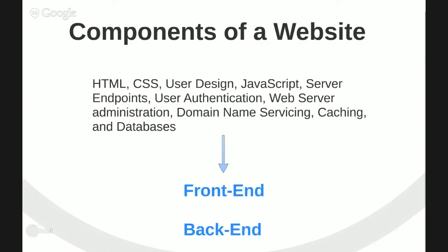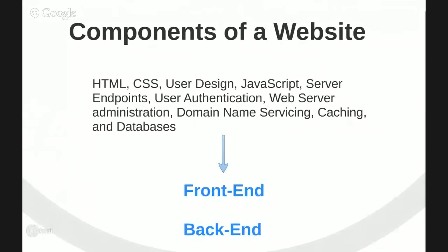To help programmers categorize this, we often put these components into two categories: the front end and the back end. This is the most common terminology you'll ever hear in web development. The front end involves anything that the user sees - the browser, the design of the page, the JavaScripting of the page. Components like HTML, CSS, and user design are front-end development.